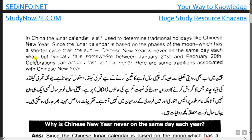Chinese New Year falls each year somewhere between January 20 and February 20. چینی سالِ نو ہر سال کسی ایک ہی دن نہیں آتا بلکہ عام طور پر 21 جنوری اور 20 فروری کے درمیان کہیں بھی آ جاتا ہے — یعنی یہ 21 جنوری سے لے کر 20 فروری کے درمیان کسی بھی دن آ سکتا ہے۔